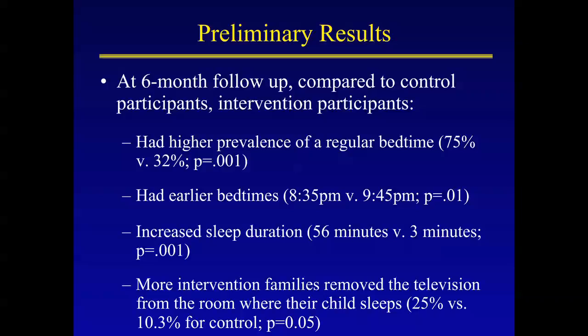Preliminary results show that at six months, intervention participants had higher prevalence of a regular bedtime. When we started, about 15% in both groups endorsed a regular bedtime; that increased to about 32% in the control group and 75% in the intervention group. The intervention children had earlier bedtimes — 8:35 versus 9:45 for the control children — and were sleeping about 53 to 56 minutes more. More intervention families had also reduced or removed the television from the room where their child sleeps. We now know we can change sleep behaviors; the next step is to see whether we can change body mass index.